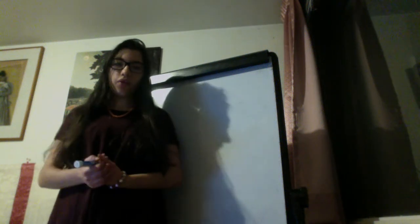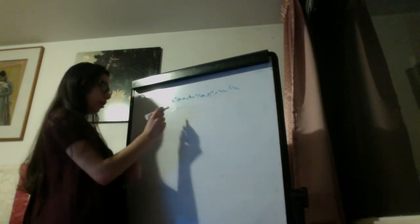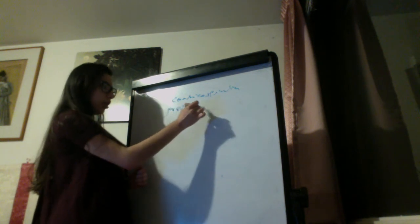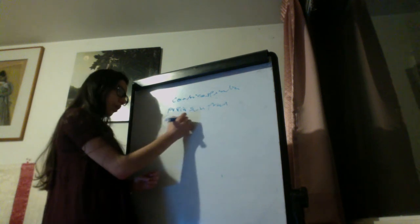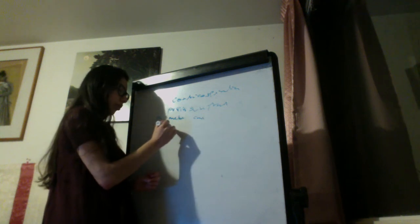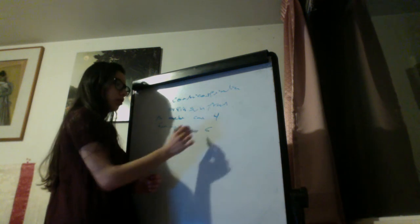We are going to see the motor pathway for the limbs and trunk — this will be the corticospinal tract. We will begin on the precentral gyri in the frontal cortex. We have the primary motor cortex and supplementary motor cortex. Primary motor cortex is Brodmann area 4 and supplementary motor cortex is area 6.